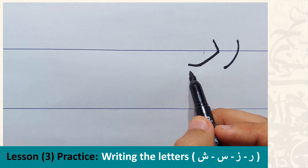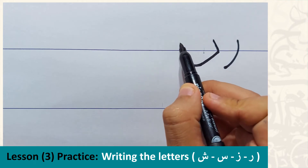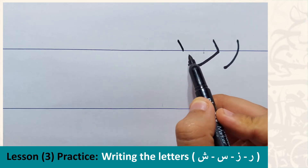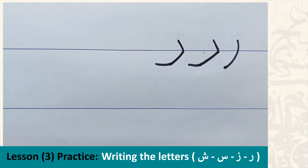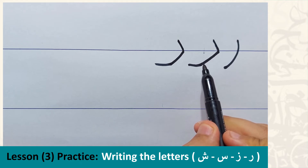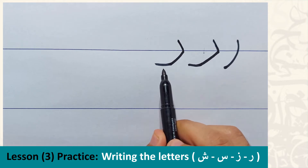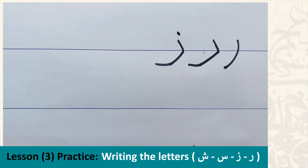The second letter in this group has the same shape — three sloped lines: one, two, and three. The difference again is in the number of dots. The first letter has no dots, while the second letter has a single dot on top.